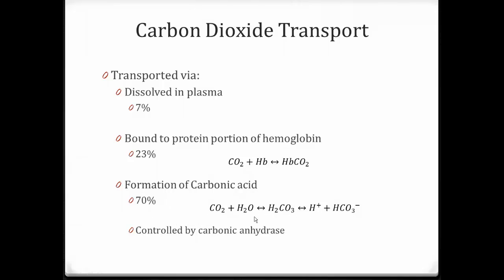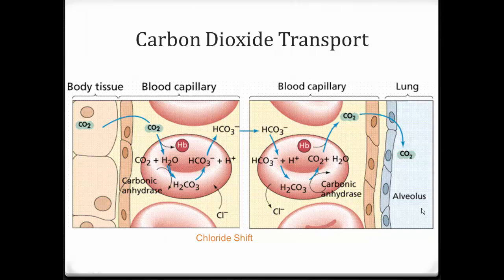Notice this equation — it's very important. Carbon dioxide combines with water to form carbonic acid. Carbonic acid then dissociates into hydrogen ions and bicarbonate. We'll use that equation to understand how carbon dioxide is transported. This equation is also controlled by the enzyme carbonic anhydrase.